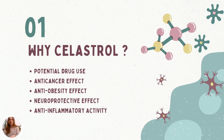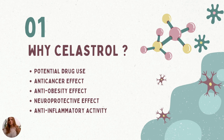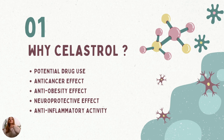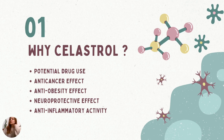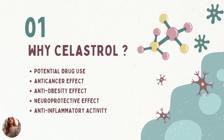Celastrol has also been shown in both in vivo and in vitro models of neurological diseases such as Parkinson's disease, Alzheimer's disease, multiple sclerosis, and amyotrophic lateral sclerosis to modulate pro-inflammatory cytokine production, prevent the generation of reactive oxygen species, limit oxidative damage, protect against cell death, and regulate heat shock proteins. Celastrol also reduces food intake and increases energy expenditure, leading to weight loss by increasing leptin hormone sensitivity.